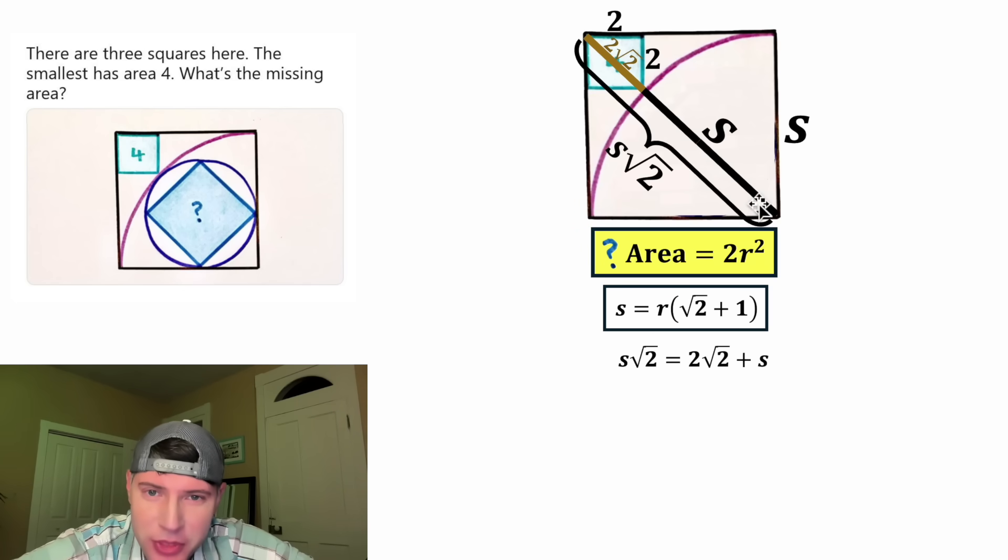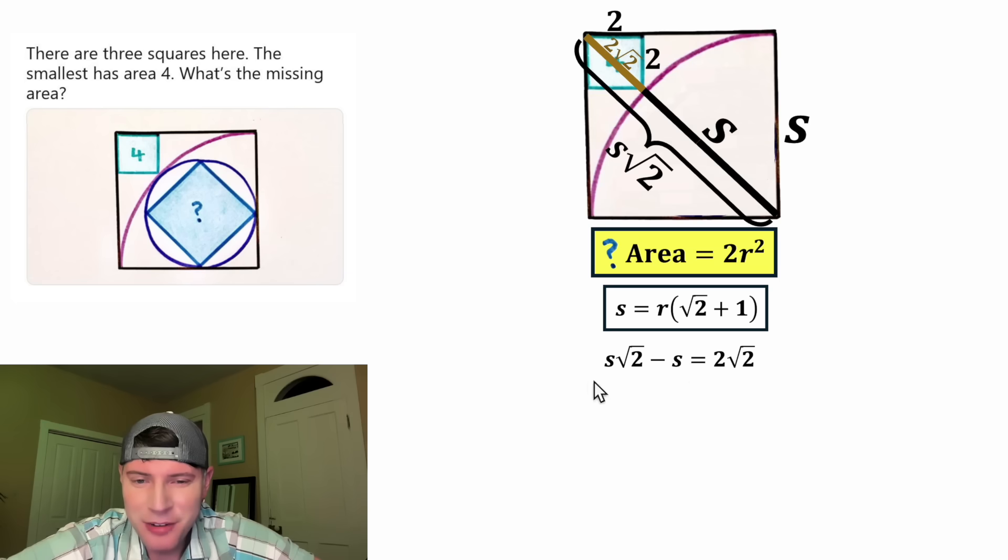And now we can set this whole thing, which is s root two, equal to two root two plus s. And now we have a single equation in terms of the variable s. So we can solve for s. Let's get all the s's to the same side of the equation. We can do that by subtracting s from both sides. On the left-hand side, it'll be s root two minus s. And on the right-hand side, this positive s and negative s will cancel each other out. Now on the left-hand side, each of these terms contains an s. Let's factor out that s. s times what is s root two? That's square root of two. And then s times what is negative s? That's negative one. So this is the same thing as this. And that's still going to be equal to two square root of two.